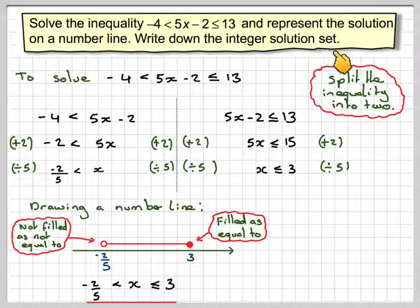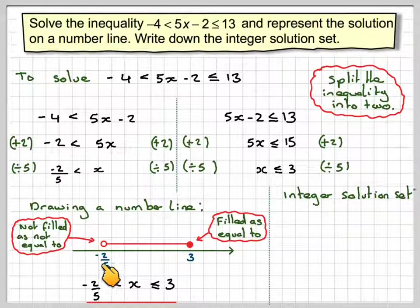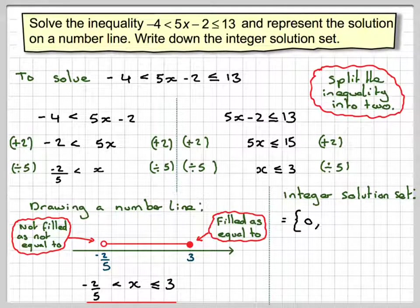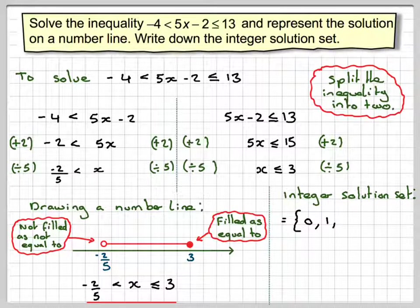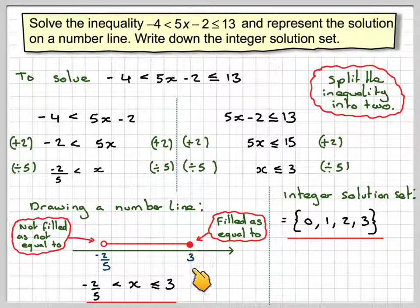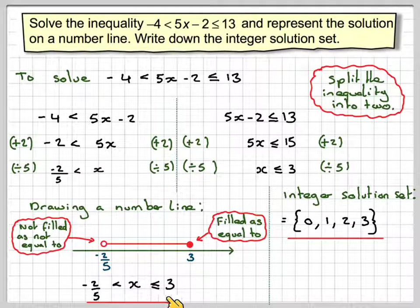Then it says write down the integer solution set. So the first integer after minus 2 over 5 is 0. The next one will be 1, then 2. And we're allowed to have 3 because it can be equal to 3. So this is the integer solution set for that inequality.